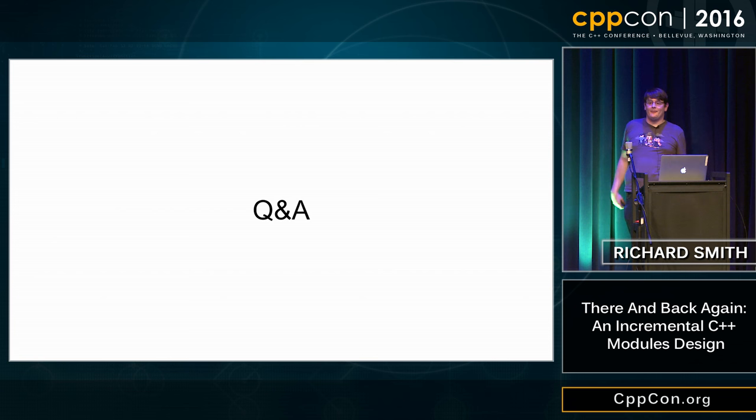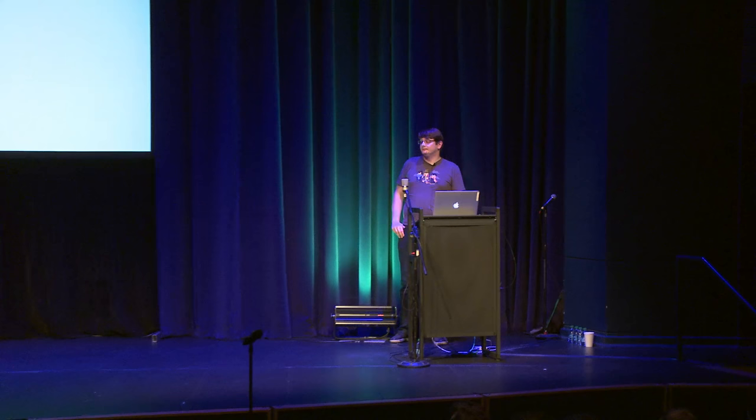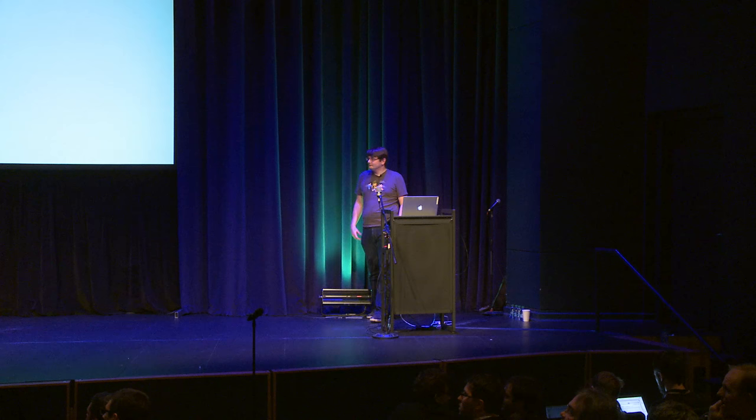Q&A: On import legacy having similar problems to pragma once in determining whether a file is unique — yes, that's true. Pragma once has various problems, particularly on file systems that deduplicate files with symlinks. In practice, implementations have reasonable solutions to those problems, and they may not be perfect, but in most cases you can get the right thing to happen with pragma once, and likewise with import legacy.